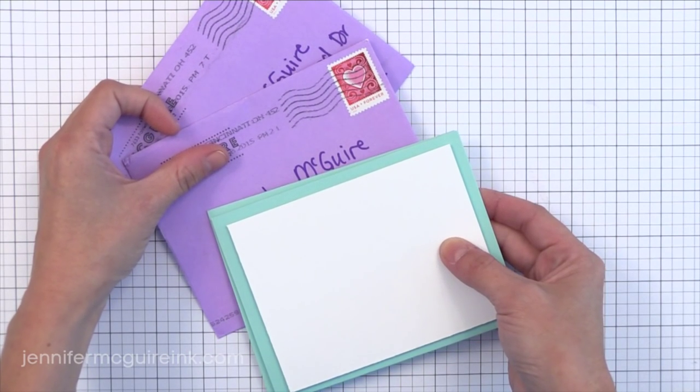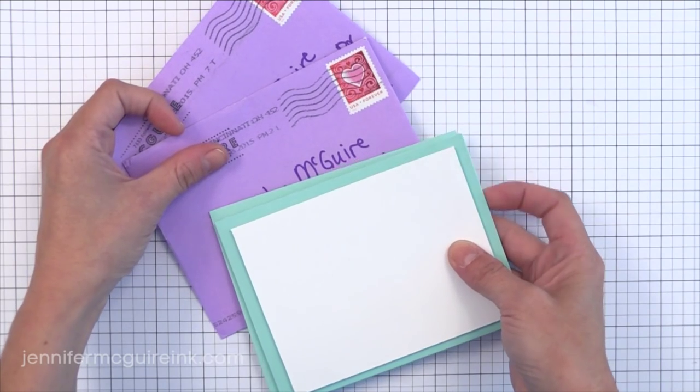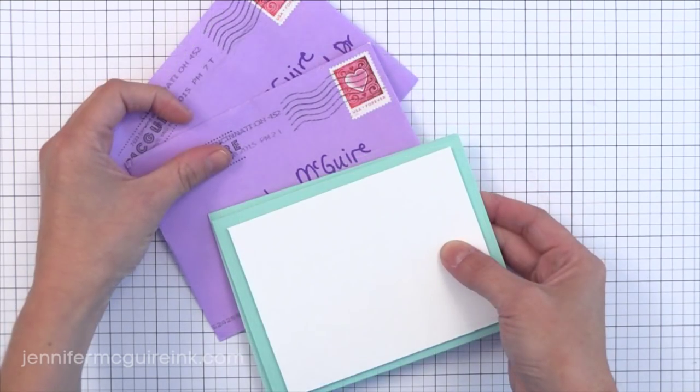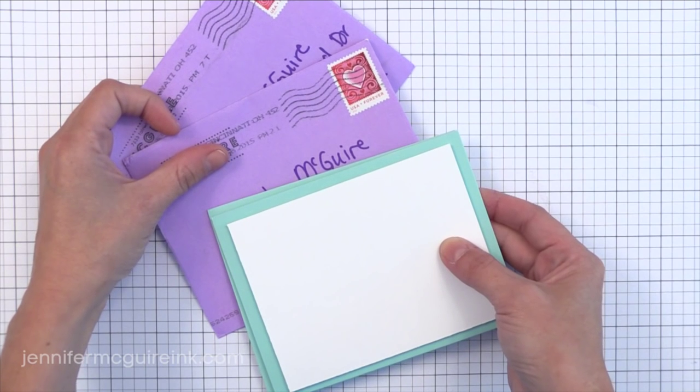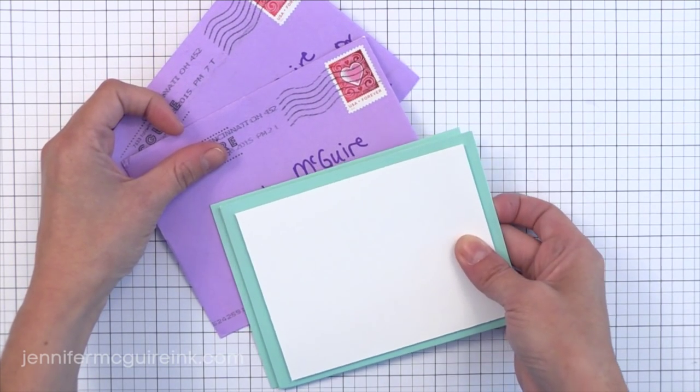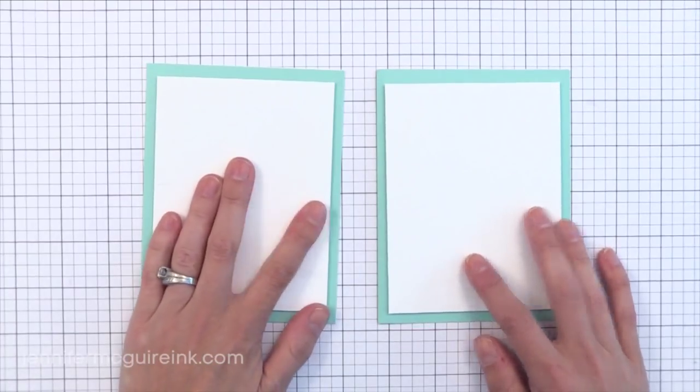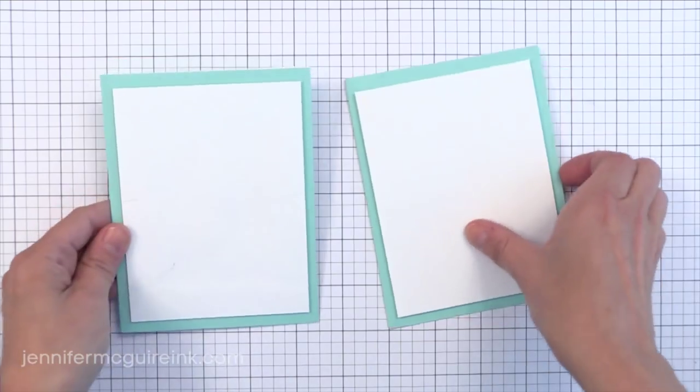These two cards are the same. The only difference is what was used for dimension. I have a note card with a white panel, a large white card stock panel adhered to the front. On one of the cards I used foam tape to adhere it. On the other I used a large piece of craft foam. And then I sent it through the mail and let it get crushed and beat up how it normally does going through the mail. And this is what I ended up with.